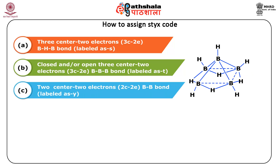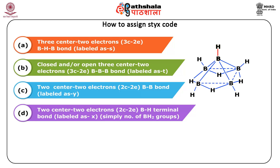The two-center, two-electron boron-boron bond can be labeled as Y, and the two-center, two-electron boron-hydrogen terminal bond can be labeled as X. The boron-boron-boron bond may be open or closed, but subsequent theoretical studies have shown that open boron-boron-boron bonds need not be considered. The three-center bonds are necessary to account for boron hydride bonding because each boron-hydrogen unit at a polyhedral vertex can supply three orbitals but only two electrons to the framework.